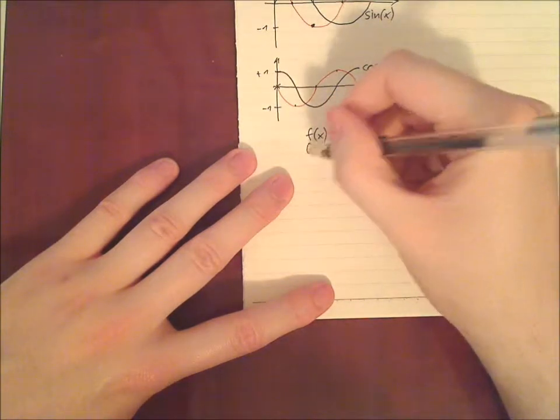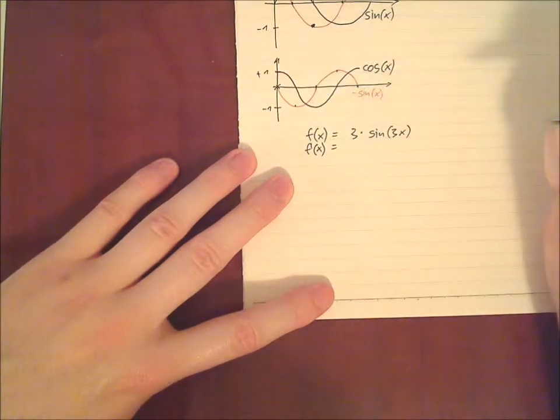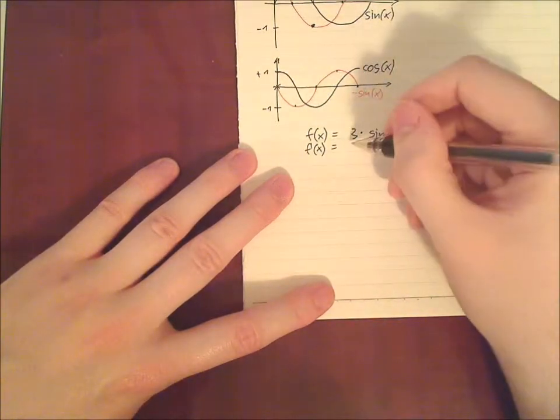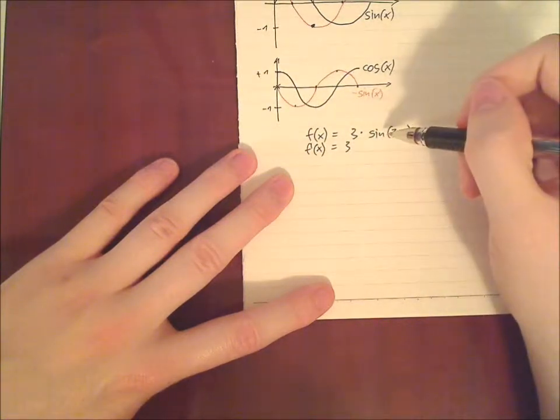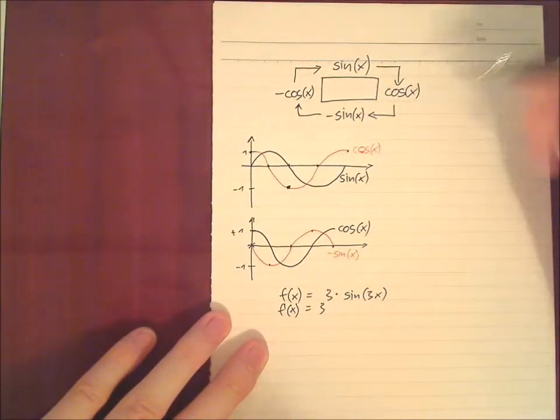And we want to differentiate. So how to differentiate? We just need to, 3, this is just a factor, so 3 stays 3. Sine is, as we remember our rectangle, sine becomes cosine.